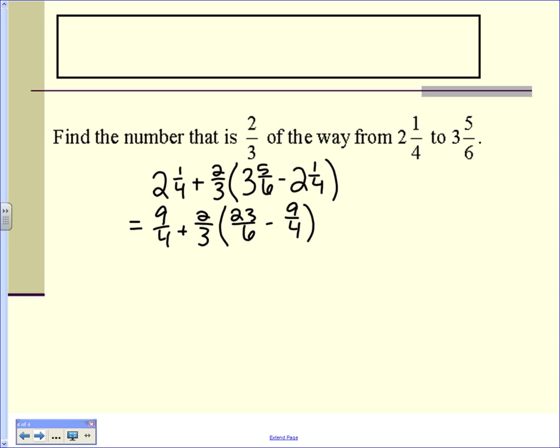Common denominator would be what? You could do 24. I would pick 12 because it's smaller. Make this 46 over 12 minus what? 27 over 12. 46 minus 27 is? 19 over 12.